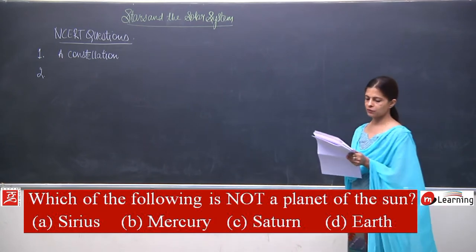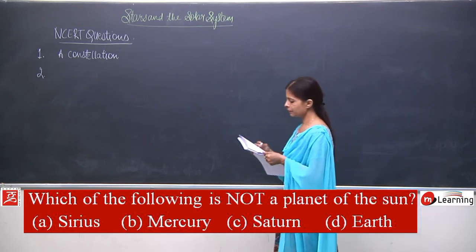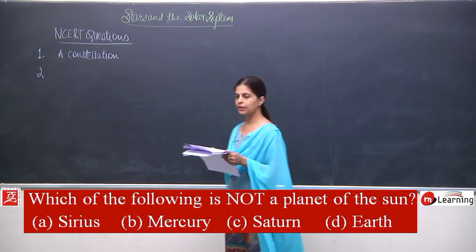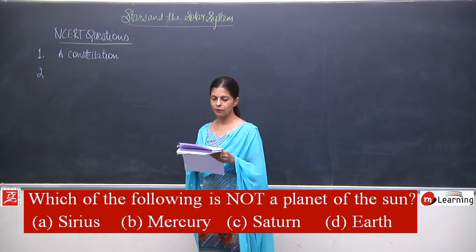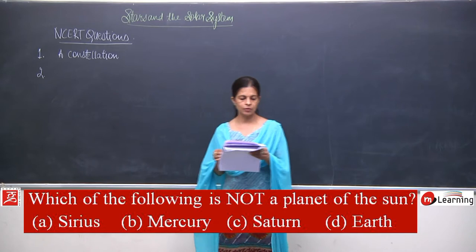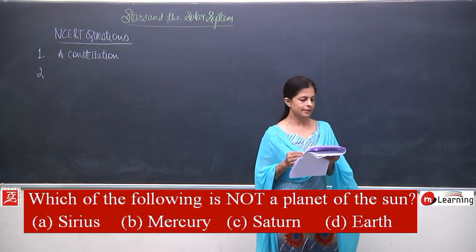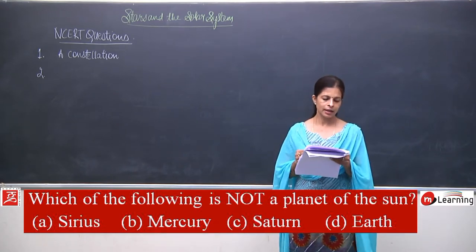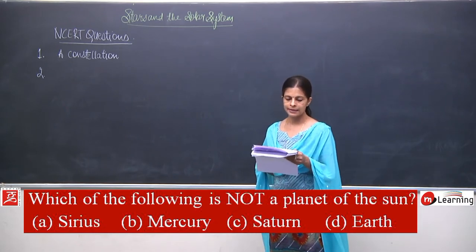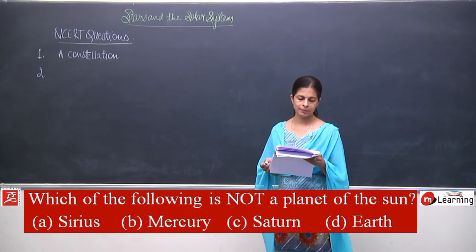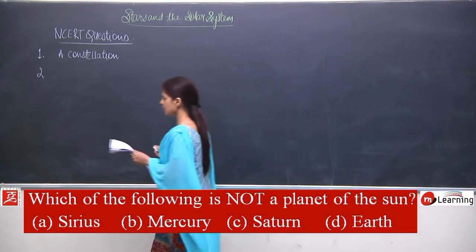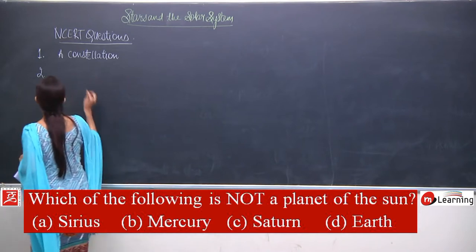Now come to the next one. The next question is: which of the following is not a planet of the sun? The options are A — Sirius, B — Mercury (a planet), C — Saturn (a planet), D — Earth (a planet). So Sirius is the correct answer — it is not a planet.